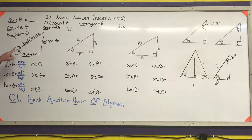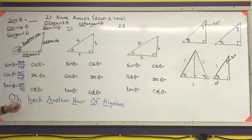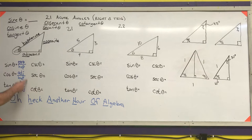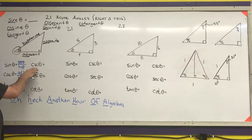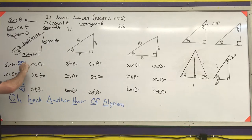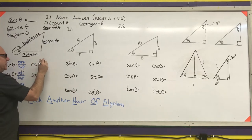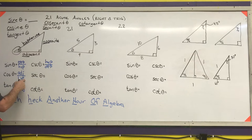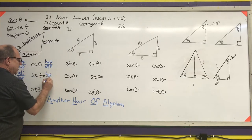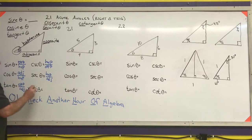You do need to memorize these. They will appear on multiple tests this semester. For the other three trig functions, cosecant goes with sine, secant goes with cosine, and cotangent goes with tangent — all you do is take the reciprocals. Cosecant is hypotenuse over opposite, secant is hypotenuse over adjacent, and cotangent is adjacent over opposite.